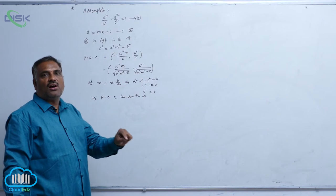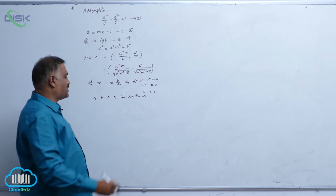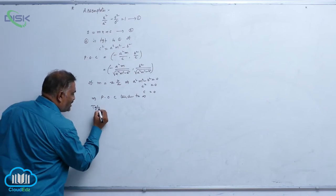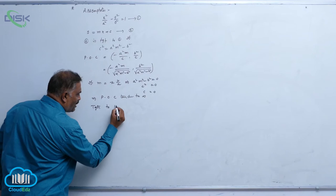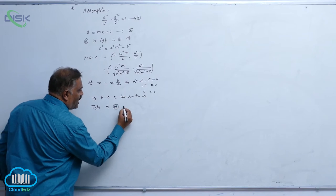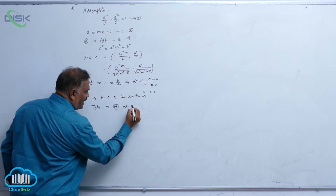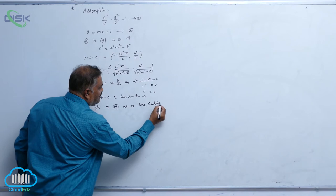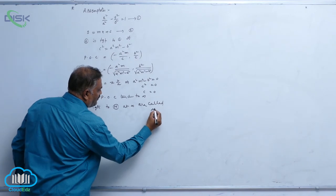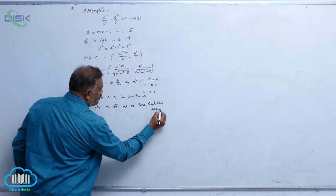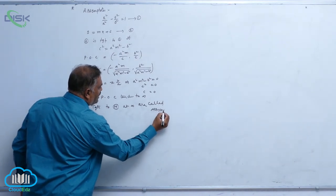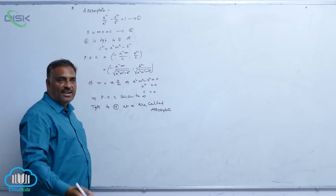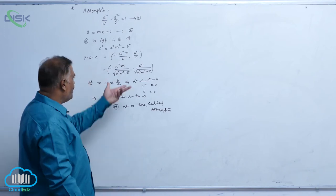So, they are called asymptotes. Tangents to a hyperbola at infinity are called asymptotes. Asymptotes are nothing but tangents — basically, tangents are straight lines. We will see how.